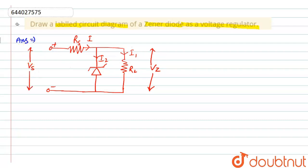So, I have drawn this diagram. This is a Zener diode as a voltage regulator. As you can see, this is the figure. Thank you for listening.